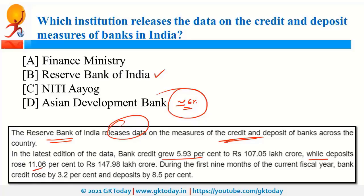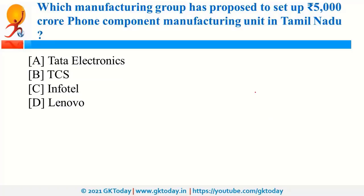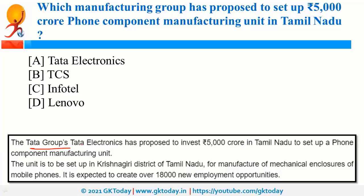Tata Group — specifically Tata Electronics — has proposed setting up a phone component manufacturing unit worth 5,000 crore rupees in Tamil Nadu. Tamil Nadu was also in news because of the Grand Anicut Canal system.